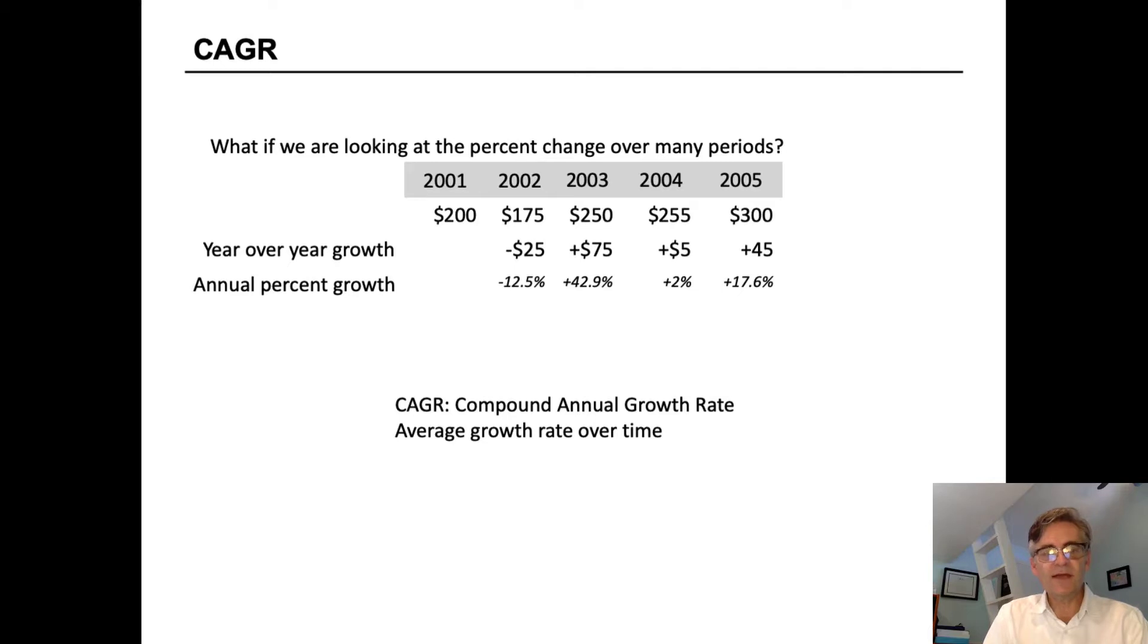When we think about the annual percent growth or the year-over-year growth, we can do that the same way we looked at percent change from one year to the next. We can see that the $25 decline in 2002 was a 12.5% decline from 2001 to 2002. But the following year was strong growth, 42% growth, kind of flattish, 2% growth in 2004, and then another step up of 17% in 2005.